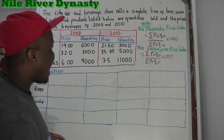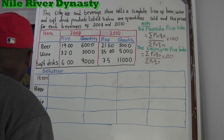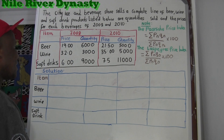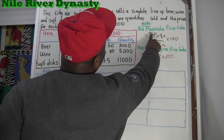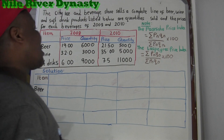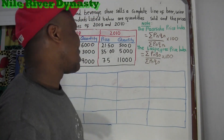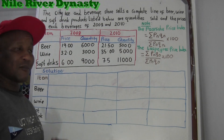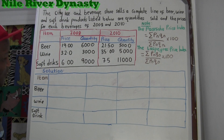So now they want us to solve this question by using the Paasche price index and also the Laspeyres price index. They give you the formula — most of the time they do, but you can also memorize it.